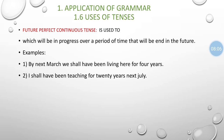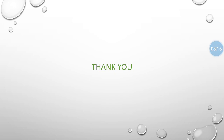So, these are the tenses — present, past, and future. Future tense also has four aspects. I hope students understood the topic very well. Thank you.